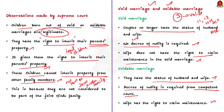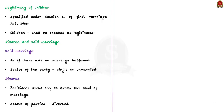The legitimacy of children under void and voidable marriages is specified under Section 16 of the Hindu Marriage Act 1955. Children born out of both void marriages and voidable marriages shall be treated as legitimate and they have the right to inherit their parents' property. This is what the Supreme Court mentioned in the recent judgment.